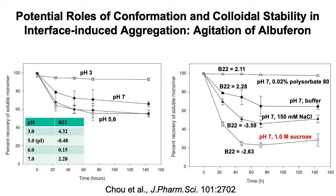I wanted to give one last example, trying to bring a lot of things together, looking at the roles of conformational and colloidal stability on agitation-induced aggregation of a protein. In this study, the protein was agitated and recovery of monomer was a measurement of aggregation. At pH 7, there's a modest loss of protein to aggregates. At pH 3, this is almost completely inhibited during agitation. And at pH 5 and 6, you get a little bit more aggregation.